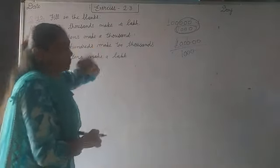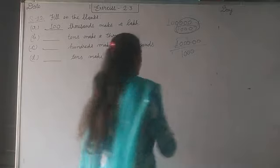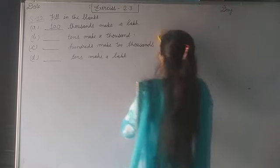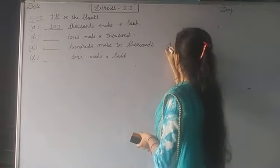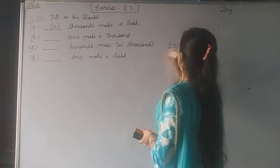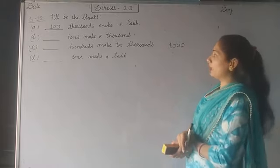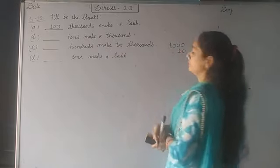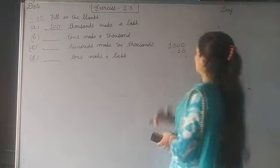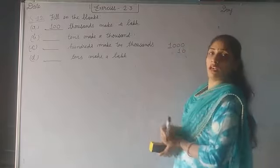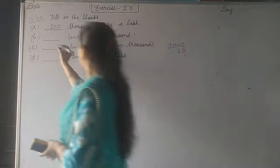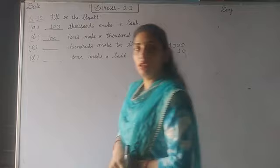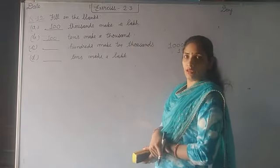Second: dash tens make a thousand. Same method we use here. Again, you will write one thousand. Write it in numbers. Then tens. Divide it. One zero gets crossed. What is left? Again hundred. Then the answer is hundred tens make a thousand.